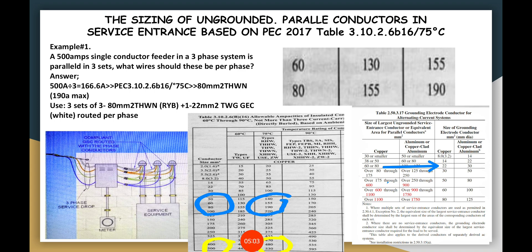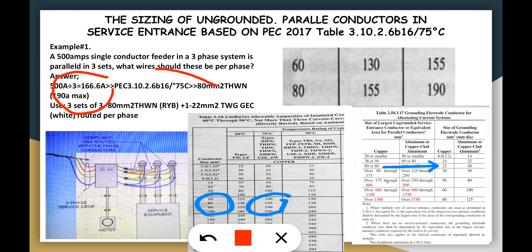Example number one at the service entrance: we have a 500-ampere single-conductor feeder in a three-phase system, and this is going to be paralleled in three sets. The answer is that the 500 amps must be divided by three, giving us 166.6 amperes per set. Based on PEC Section 310.2.6(B), we use the 75°C column.